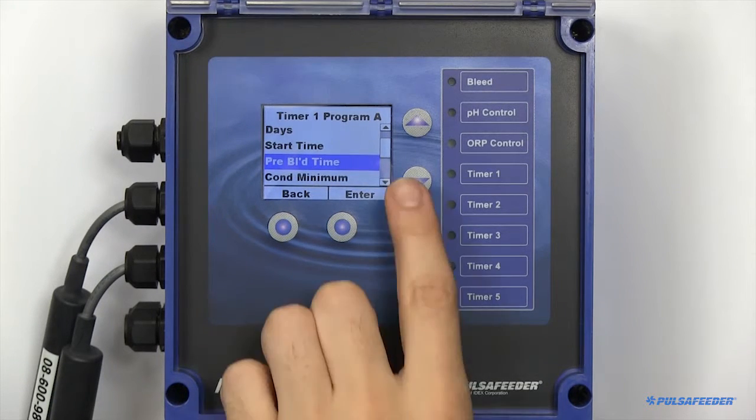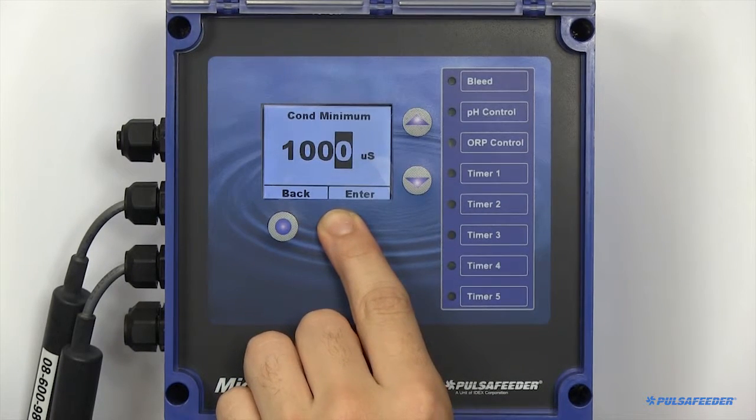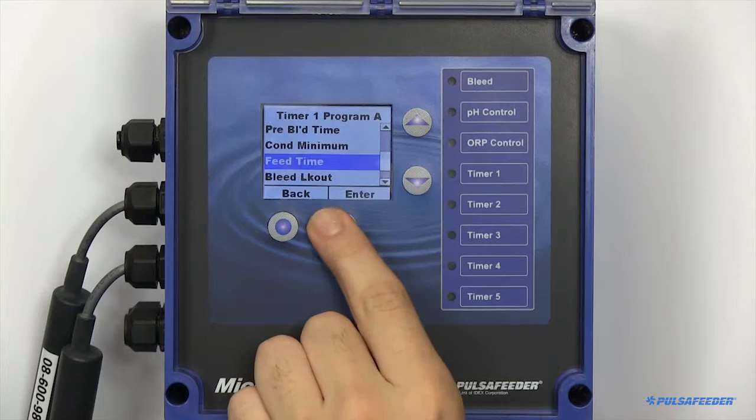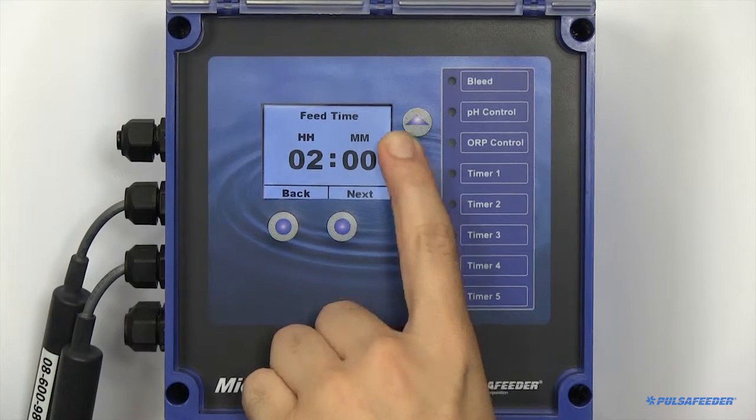If there is a minimum conductivity you would like the tower to reach to immediately begin your feed cycle, this can also be set. Next, specify your feed time, or how long you would like to feed chemical.